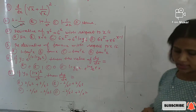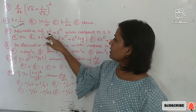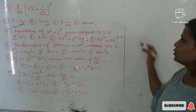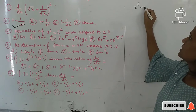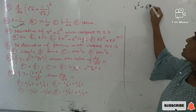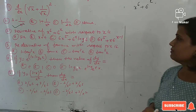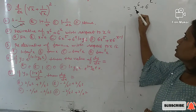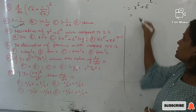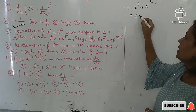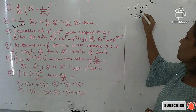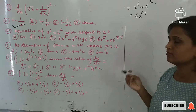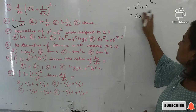Second question: find the derivative of x⁶ + 6 + 6ˣ with respect to x. For x⁶, apply the power rule: derivative is 6·x^(6−1) = 6x⁵.